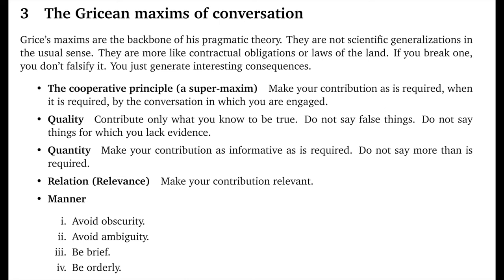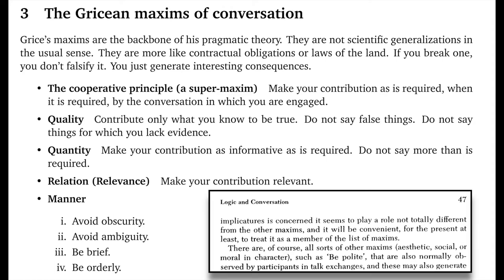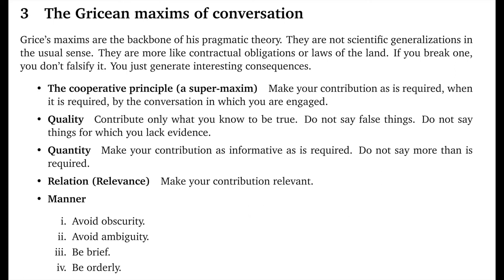The final maxim is manner. Whereas the first three maxims govern information content, the maxim of manner governs the forms we use to convey information. Manner has sub-clauses: avoid obscurity, avoid ambiguity, be brief, and be orderly. Politeness is conspicuously absent — it's sometimes called the missing maxim, and I'll propose later that we sort of add it into this mix. A really long utterance might actually be lacking in information content, paying a double toll: doing poorly on 'be brief' and on the first clause of quantity.